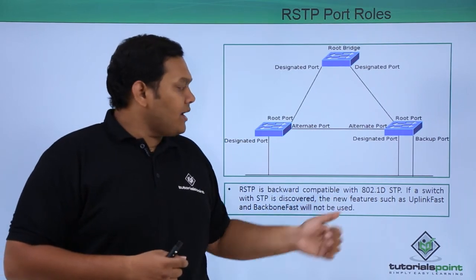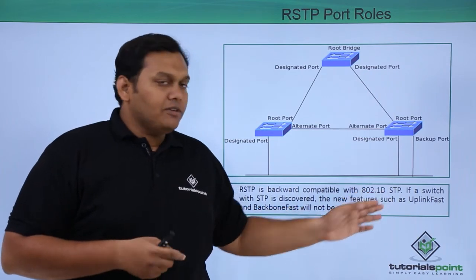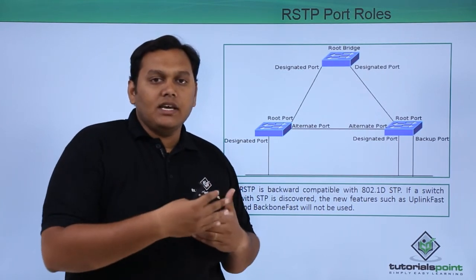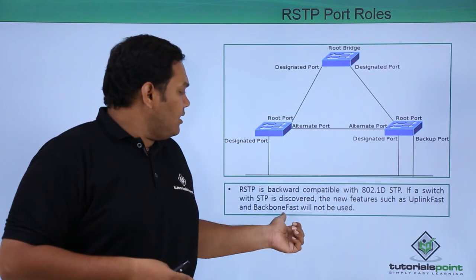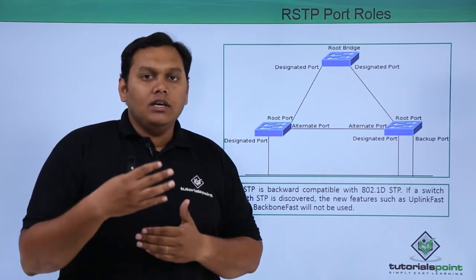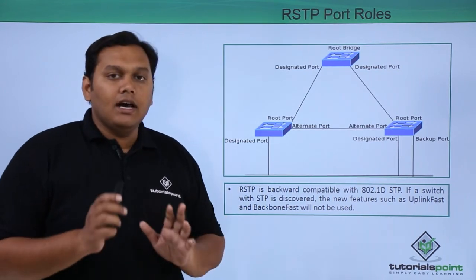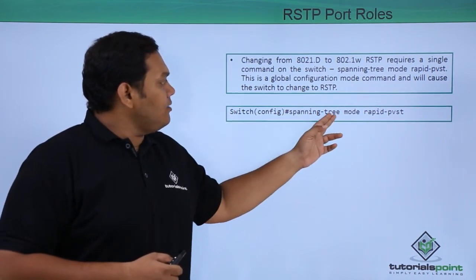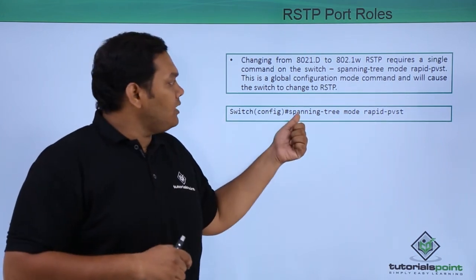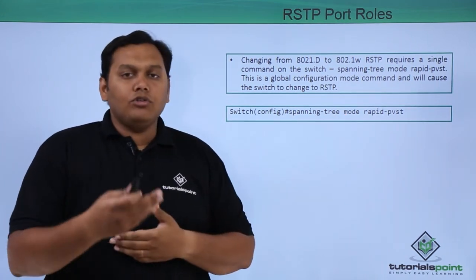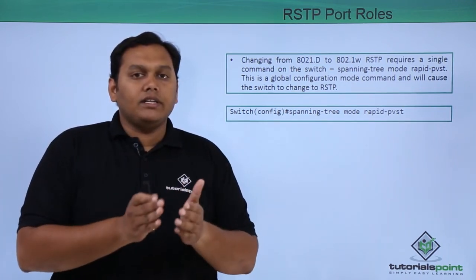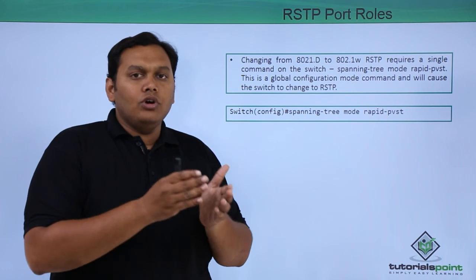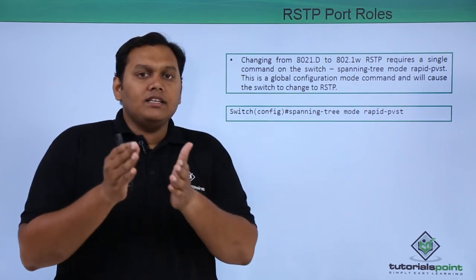RSTP is backward compatible when compared with 802.1d STP. If a switch with STP discovers that a new feature like uplink fast is enabled, it will not use uplink fast — it will only use backbone fast. To configure RSTP, enter the command 'spanning-tree mode rapid-pvst' in global configuration mode. To verify the configuration, use the command 'show spanning-tree vlan 0005' or 'show rapid spanning-tree vlan 0005'.